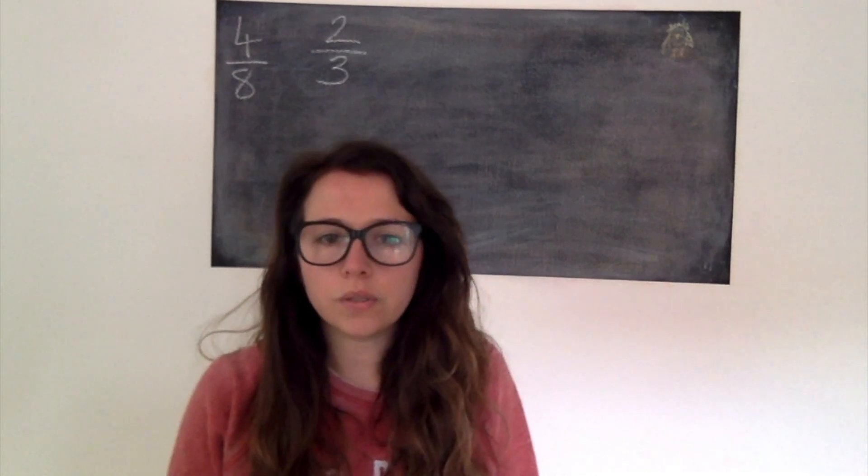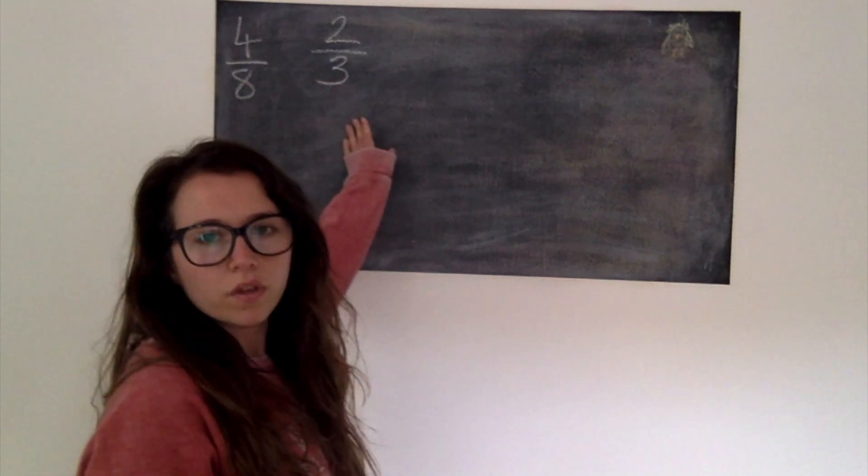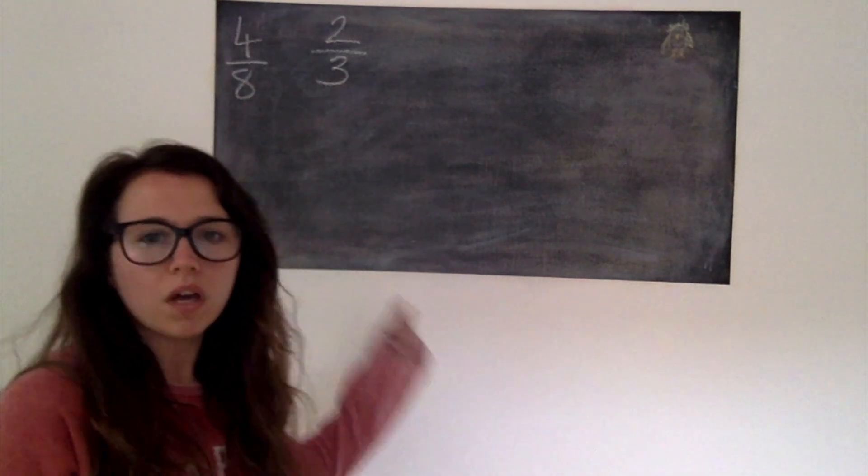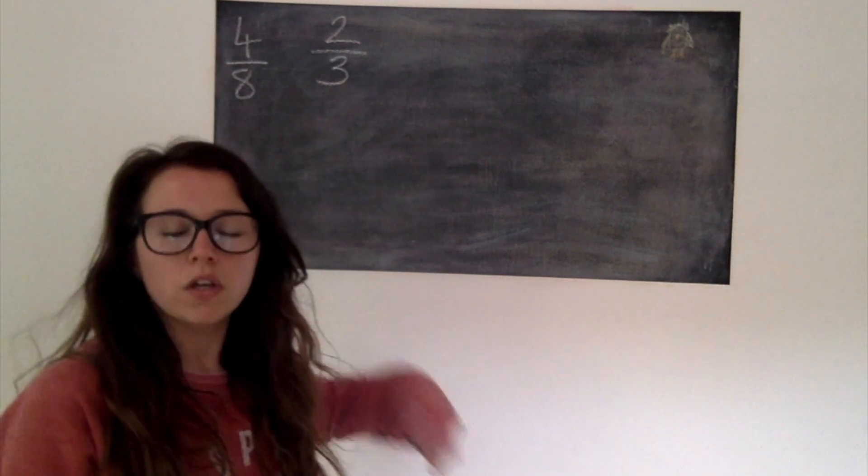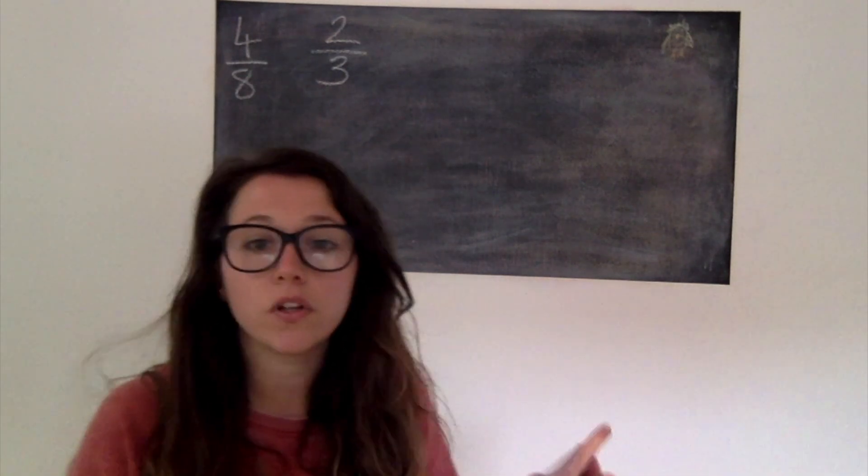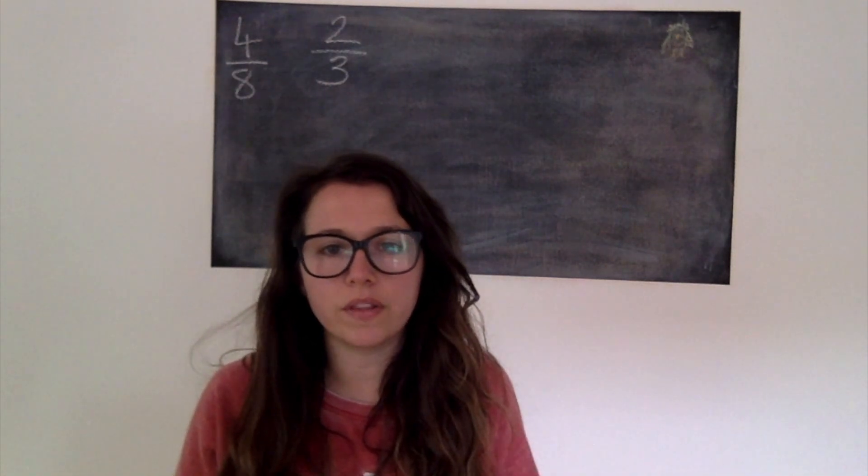The next two fractions that we're going to compare is a little bit more tricky. I've got 4/8ths and 2/3rds. It's a bit trickier because I can't turn 3rds into 8ths and I can't turn 8ths into 3rds. So what we need to do is find the lowest common multiple. Now we practiced this last week so hopefully that isn't new.